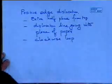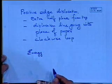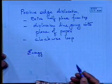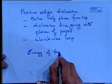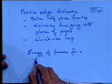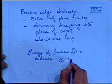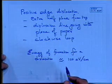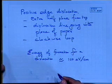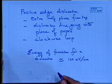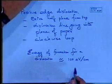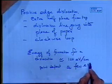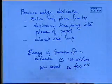The energy required to create a dislocation is of the order of 100 electron volts per centimeter. The dislocation has a length — it's a one-dimensional defect — so to create that length it costs about 100 eV per centimeter. In comparison, for a point defect it was of the order of a few eV. So one point defect can be much more easily created than a dislocation.